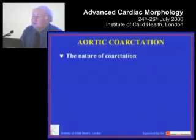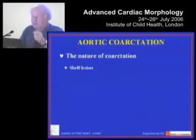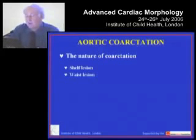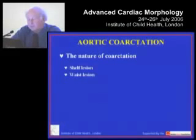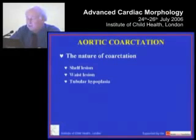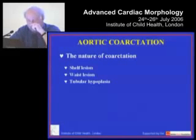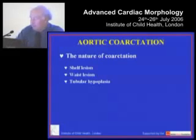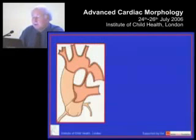If we look at the coarctation lesion, there are three types. The coarctation lesion can take the form of a shelf within the lumen of the aorta, or the walls of the aorta itself can be folded in so that we have what we call the waist lesion. The third type is where the entirety of the aortic arch is narrowed, either the transverse arch or the isthmus, and that is known as tubular hypoplasia.